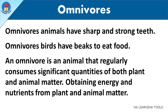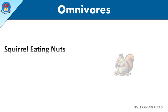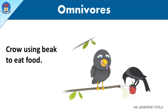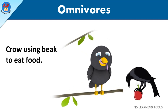Omnivores obtain energy and nutrients from both plant and animal matter. For example, a squirrel eats nuts using sharp and strong teeth, and a crow uses its beak to eat food.